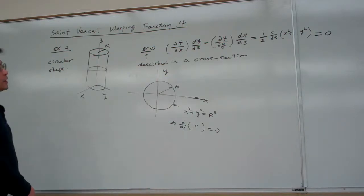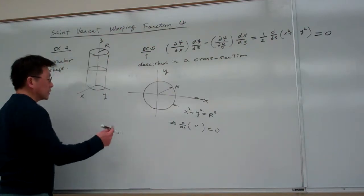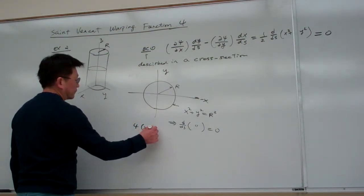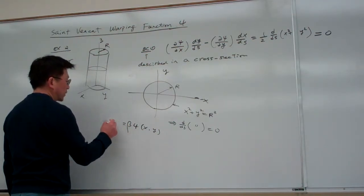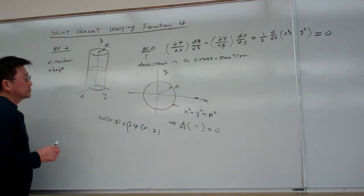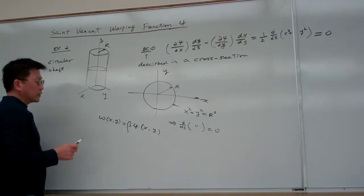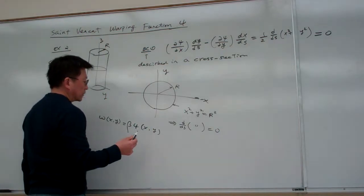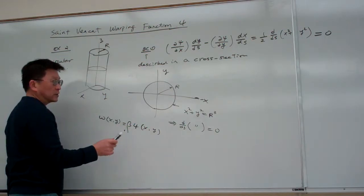For certain arguments that people directly say, the warping function multiplied with beta equals the displacement in the z direction. People have the meta argument in this way: they say that for a circular shaft, the warping function must be equal to zero.